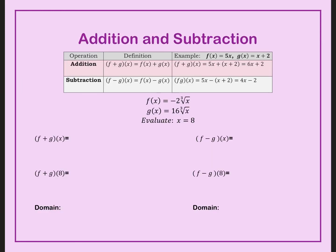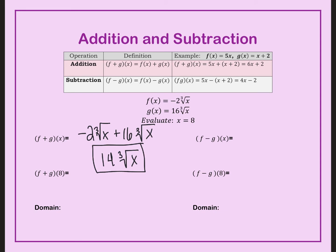Let's start with adding two functions together. We have f of x and g of x. When we add them together, we have negative 2 times the cube root of x plus 16 times the cube root of x. Because they both have the cube root of x, negative 2 plus 16 is 14, giving us 14 cube root of x. To evaluate at x equals 8, we plug in the cube root of 8, which is 2. So, 14 times 2 gives an answer of 28.